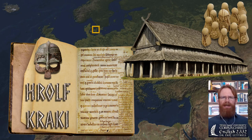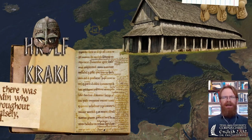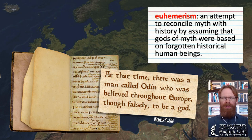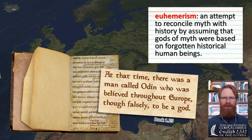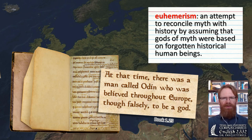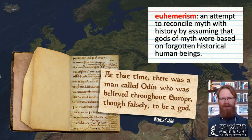Saxo relates several stories about the Norse gods with one condition — he employs what's called euhemerism. This comes from the name of a Greek historian who suggested that the gods were really just historical humans who, over time, as their legend was told, had supernatural qualities added to them. So the gods were actually once human, but people exaggerated their actual powers to grant them supernatural powers only in the story. Saxo wants to tell stories about Odin and Balder and other Norse gods, but as a Christian chronicler — writing long after the conversion of Denmark to Christianity — he wants to distance himself from any other religion. He'll say: 'at that time there was a man called Odin who was believed throughout Europe, though falsely, to be a god.' In other words, he can tell the story about Odin, but Odin was a human, not competition for the Christian God.